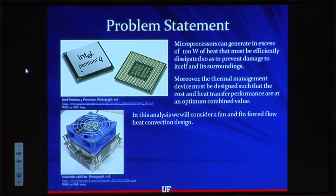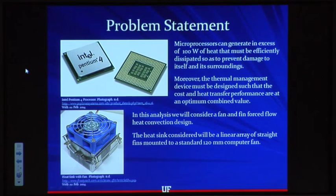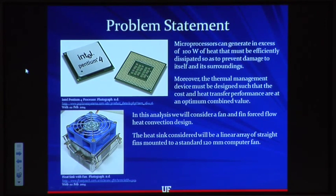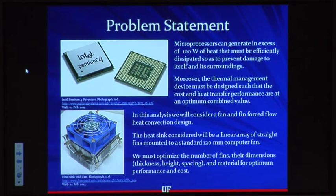In this analysis we're going to consider a fan-fin forced flow heat convection design, so there's going to be a coupling between the fan and the heat sink itself. We're going to consider a linear array of straight fins mounted to a standard 120-millimeter computer fan. We're going to optimize the number of fins, the fin dimensions — which includes the thickness, height, spacing, and so on — and the material.